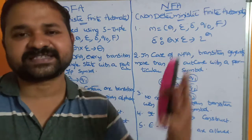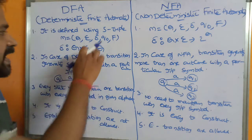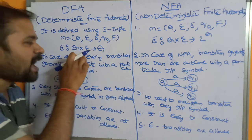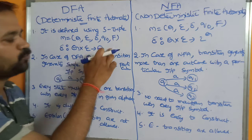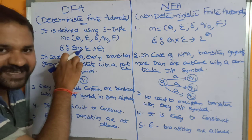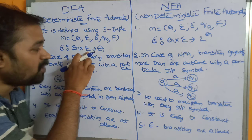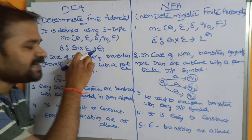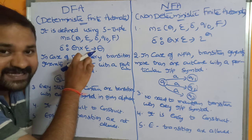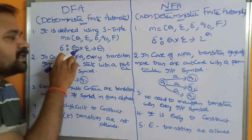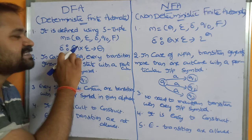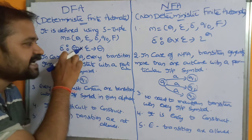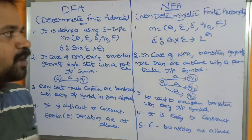Now let's see what delta (δ) is. Delta is a transition function which maps from Q × Σ to Q. So Q is a state and Σ is the input alphabet. If we apply an input symbol on state Q then we will move to another state — that is delta. Whenever we apply an input symbol on a state, we move to exactly one other state.